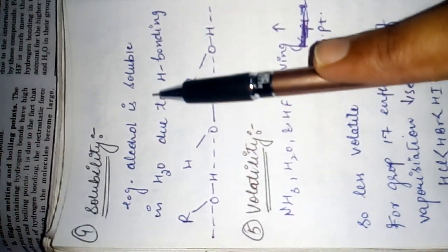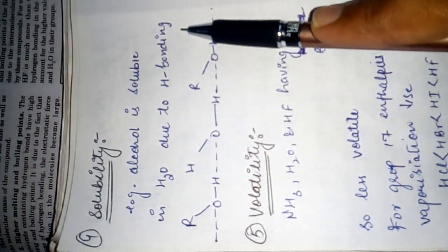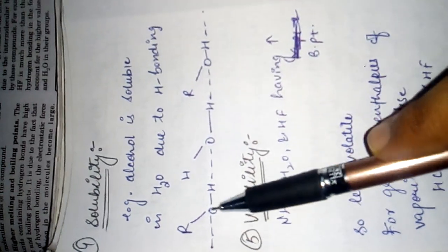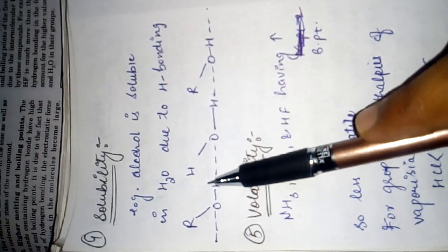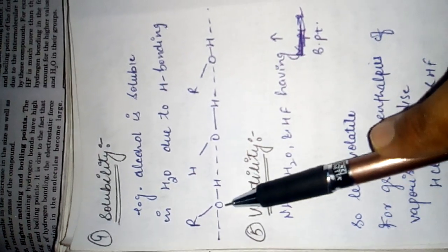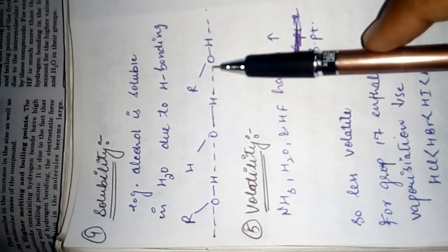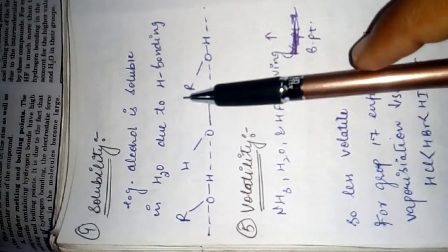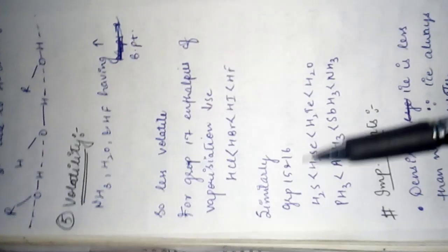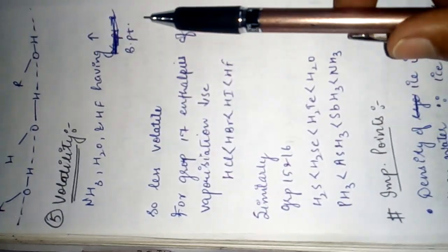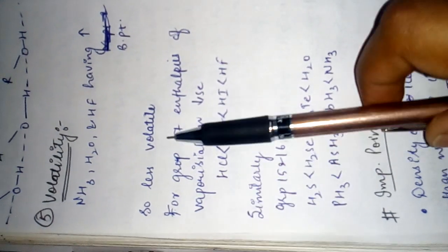Next, solubility: for example, alcohol is soluble in water due to hydrogen bonding. The hydrogen atom of an alcohol molecule makes a hydrogen bond with the oxygen of a water molecule. In this way, alcohol and water are associated, so alcohol is soluble in water.